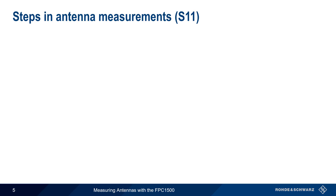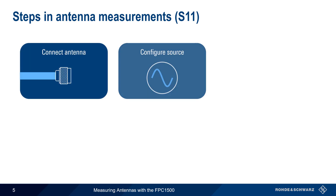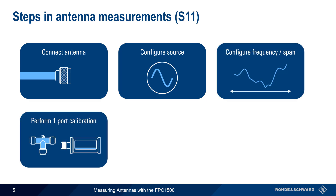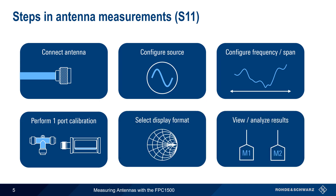There are six basic steps in making antenna impedance measurements: connecting the antenna, configuring the source or tracking generator, configuring the measurement frequency range, performing one-port calibration, selecting the display format, and viewing and/or analyzing the results. Let's start with connecting the antenna.